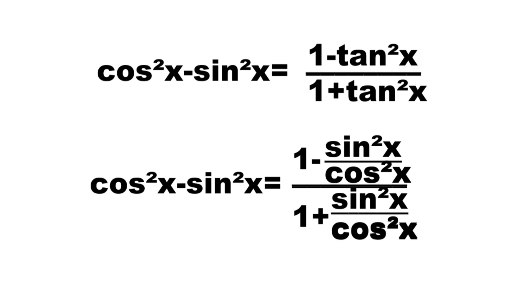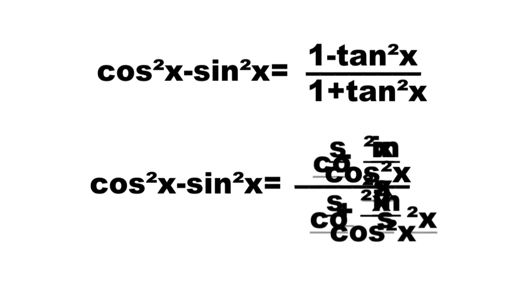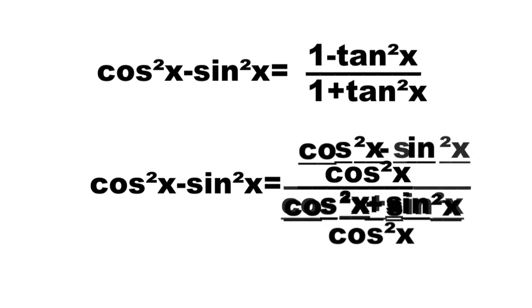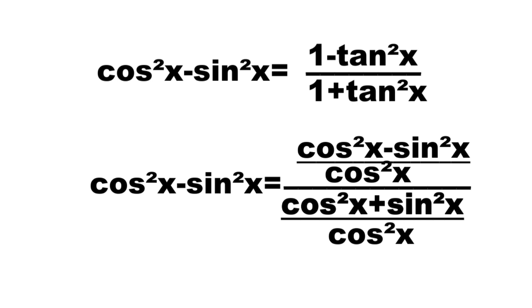Using cosine squared x as common denominators, we have cosine squared x minus sine squared x over cosine squared x, all over cosine squared x plus sine squared x over cosine squared x.